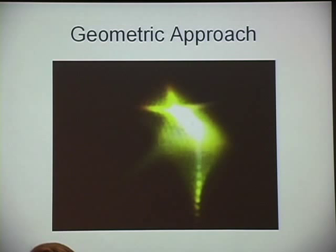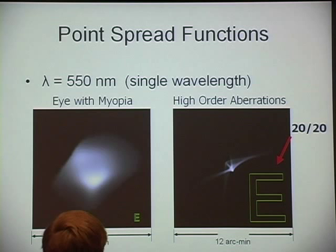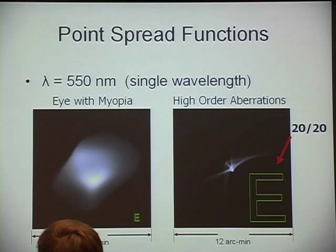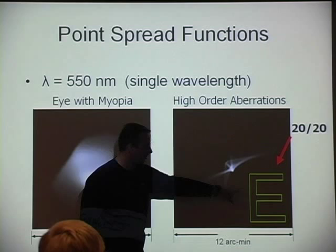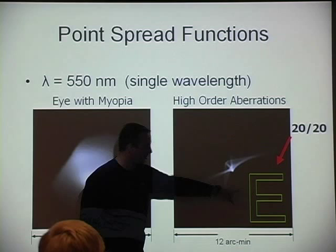For a sense of scale, I throw on a letter E — basically a resolution indication of the 20/20 E on an eye chart, roughly 5 minutes of arc. If the features of your point spread function are small compared to the E, you can see better than 20/20; if the features are large compared to the E, you cannot see 20/20. Here's a person who cannot see 20/20 and a person who can.